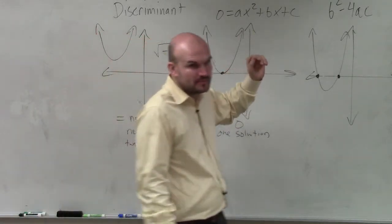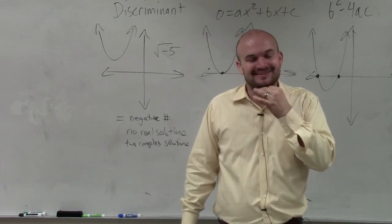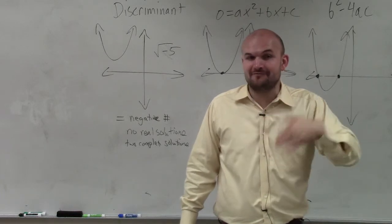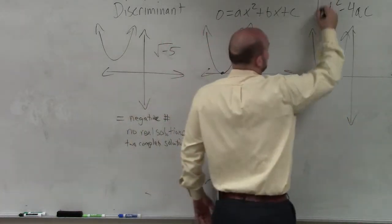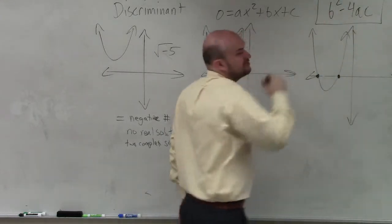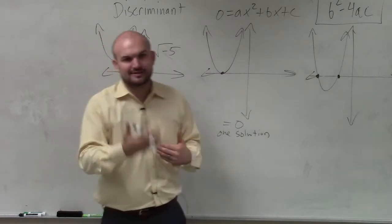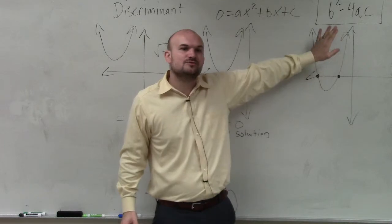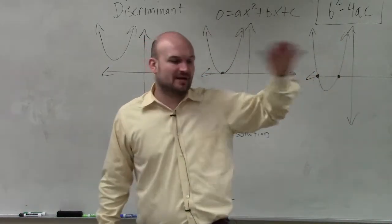What's the discriminant? b squared minus 4 times a times c. You'll understand more about the discriminant in the next instruction. But as long as you guys just understand what it is right there, it will make more sense on the next topic I go over.